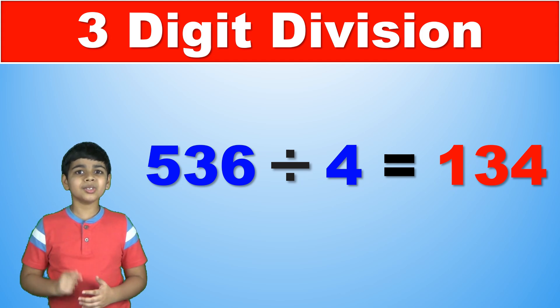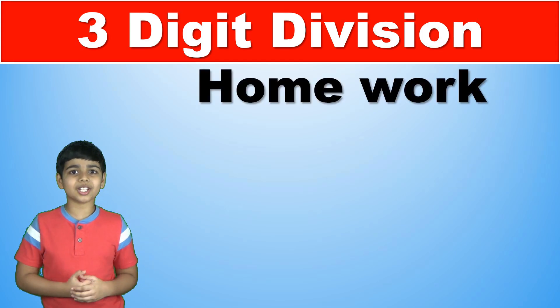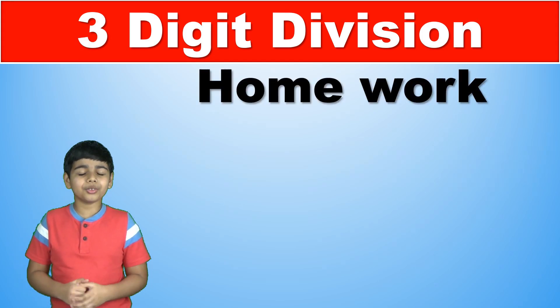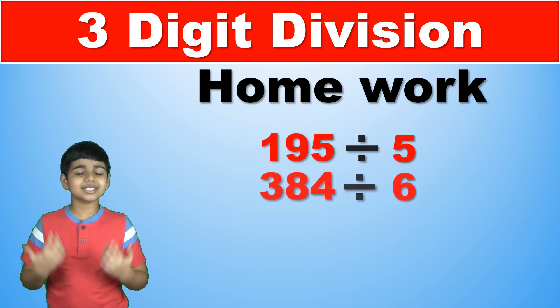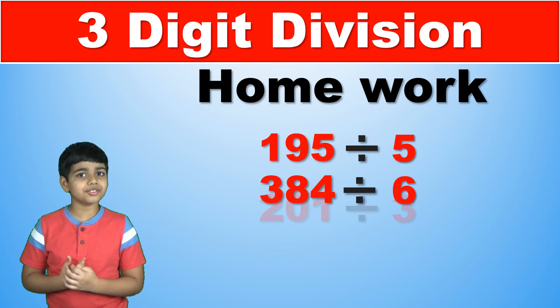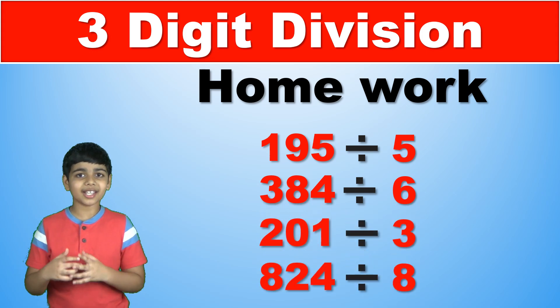Now you know how to divide 3 digit numbers by single digit numbers. Now it's homework time. Try figuring out what 195 divided by 5, 384 divided by 6, 201 divided by 3, and 824 divided by 8 are.